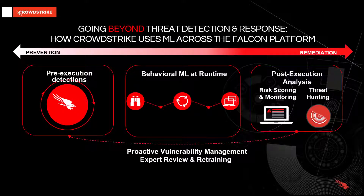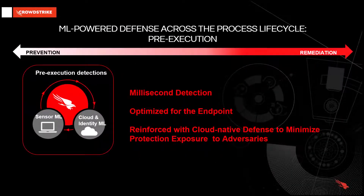CrowdStrike uses machine learning across the process lifecycle for high quality detections and preventions. This starts at pre-execution. To minimize the burden on endpoint performance, the CrowdStrike Falcon agents are designed to be extremely lightweight. Through these, local machine learning models are deployed that scan local files and are optimized for Windows, Mac OS, and Linux systems.